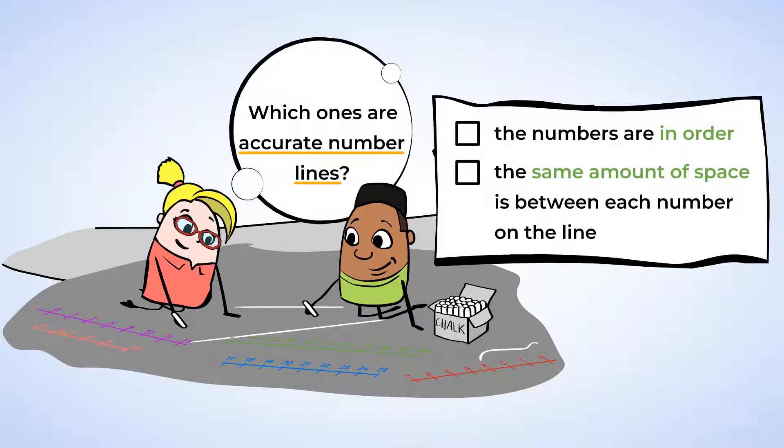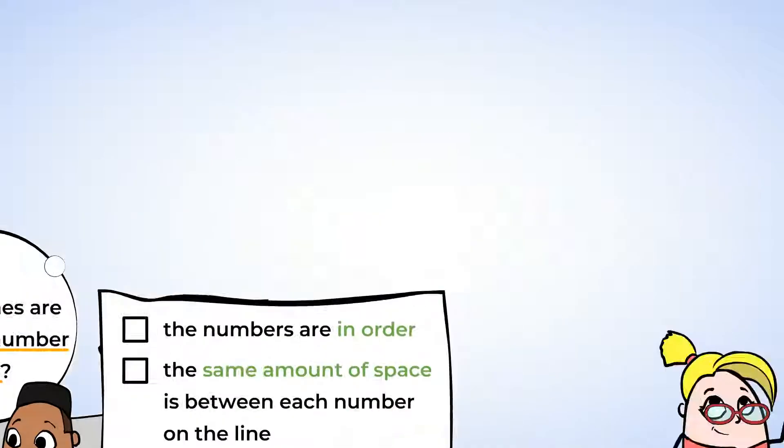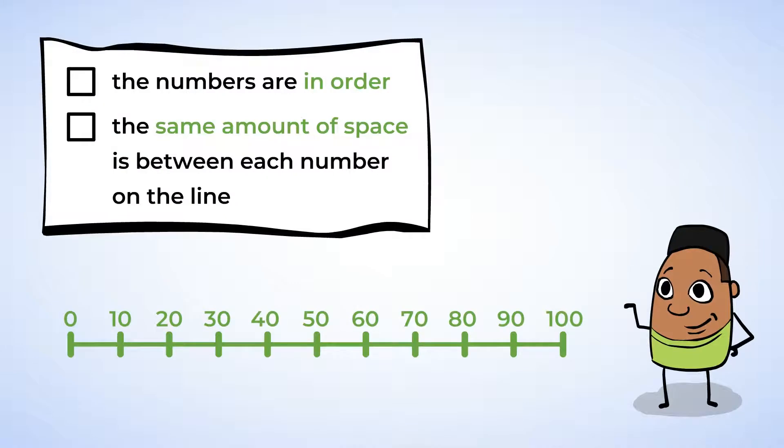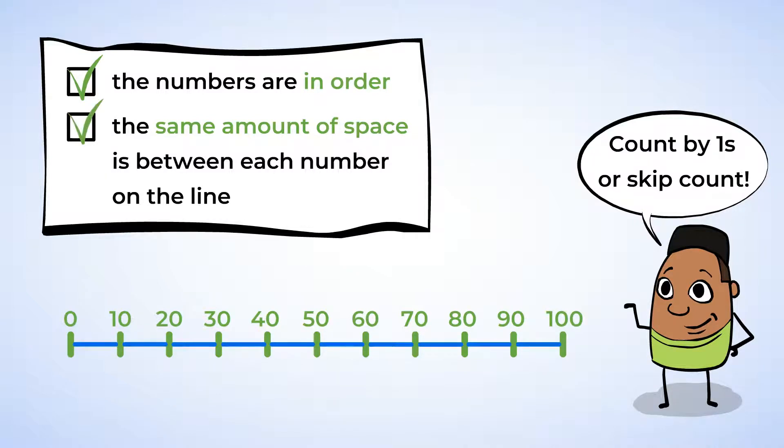Green's my favorite color. Let's look at that one now. Are the numbers in order? Yes, they skip count by 10s, from 0 to 100. Wow, this one was a little bit tricky. On a number line, you can count by 1s or skip count by any number. Now let's check the space between each mark on the number line. And it looks like the space is the same between each one. Awesome! The green number line is accurate.